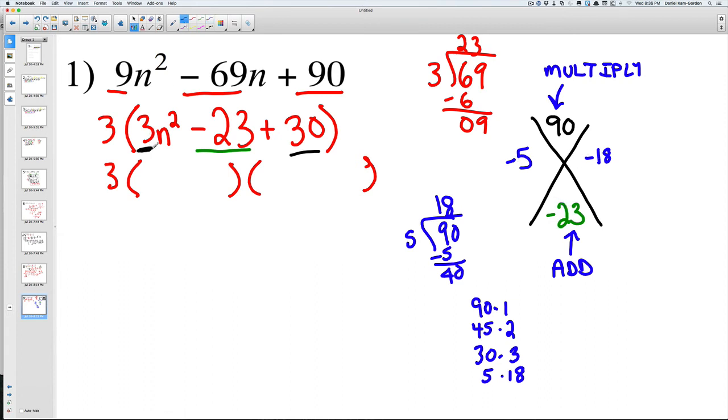Then once again, you take your first number, which was 3, and you put both of these numbers over 3. Negative 5 over 3—5 and 3 have no common factors. However, negative 18 and 3 do have a common factor.